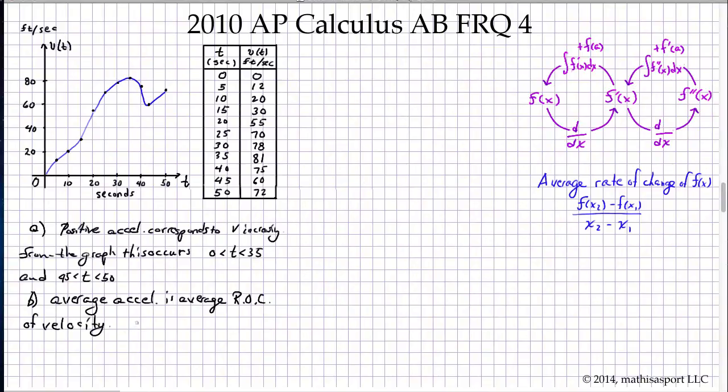So we just take the velocity at 50, subtract the velocity at zero, divide by 50, and we have 72 over 50 feet per second squared. Part C is a little more interesting because it asks us to find an approximation...